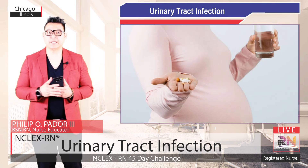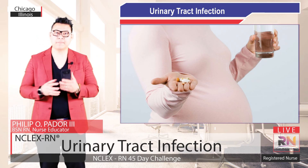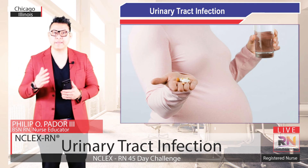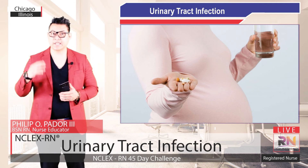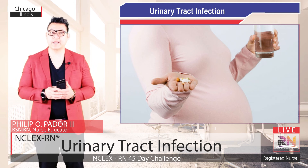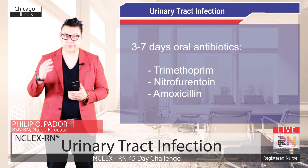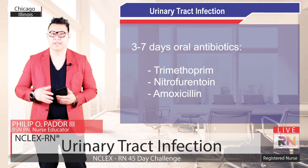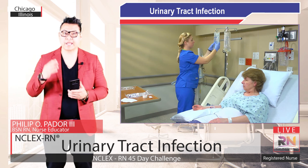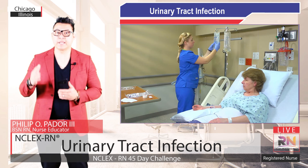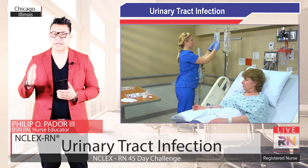Urinary tract infections are common in females. If a female patient presents with uncomplicated UTI, she is most likely to be discharged home with oral antibiotics. Treatment of UTI is empirical antibiotics for lower urinary tract infections — a three- to seven-day course consisting of either trimethoprim, nitrofurantoin, or amoxicillin. Upper UTI is generally more serious and requires IV antibiotics initially until the fever has settled, then transitioning to oral antibiotics. The course of antibiotics is generally longer with upper urinary tract infections.